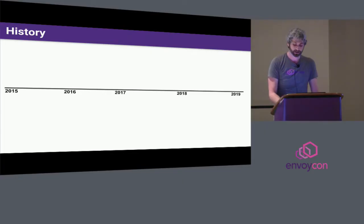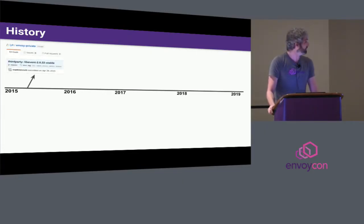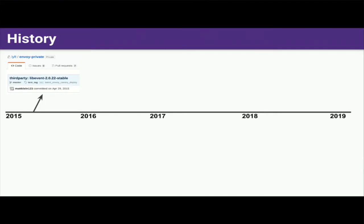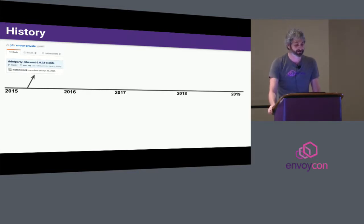I thought it would be fun to talk a little bit about the project history, which now spans almost four years. We go back to around the beginning of May 2015 — that was the first commit for what would eventually become Envoy in Lyft's private repo. Fun fact: I originally was going to call it Lyft Proxy, but someone at Lyft said we should have a better name. So I got out the thesaurus, searched for proxy, found Envoy, and said let's call it Envoy. That's why it's called Envoy.